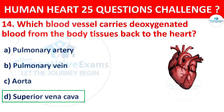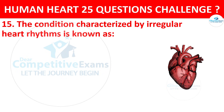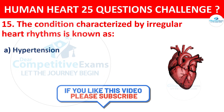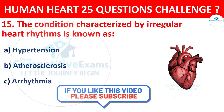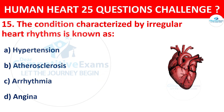Question number 15. The condition characterized by irregular heart rhythms is known as? Options: Hypertension, Atherosclerosis, Arrhythmia, or Angina. The correct answer is Arrhythmia.